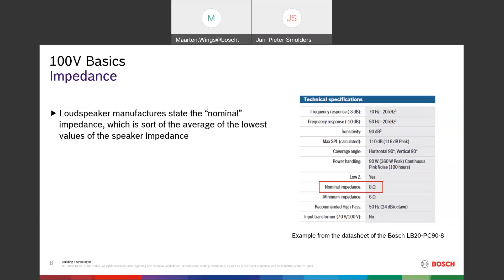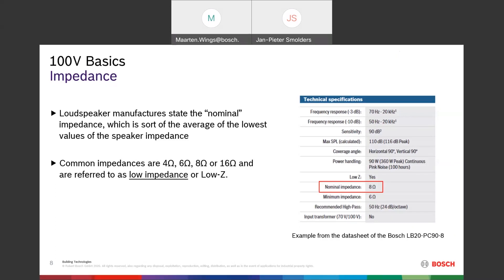The manufacturer states the nominal impedance in the data sheet. The nominal impedance is an average of the lowest values of that speaker's impedance, since impedance is not the same at all frequencies. The most common loudspeaker impedances you will see are four, six, eight, or sixteen ohms. These are referred to as low impedance — or low Z — where Z is the letter used for impedance, just as R is used for resistance.